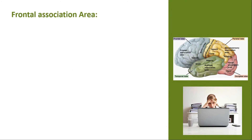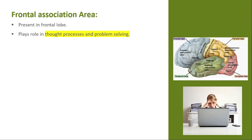The frontal association area is the part of the frontal lobe that lies in front of the motor area. It is involved in thought processes and plays a role in problem solving. In experiments, monkeys with lesions in the frontal lobe — meaning the frontal lobe was completely destroyed — were studied.